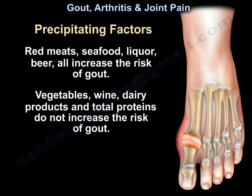Red meats, seafood, liquor, and beer increase the risk of gout. Vegetables, wine, and total protein did not increase the risk of gout.